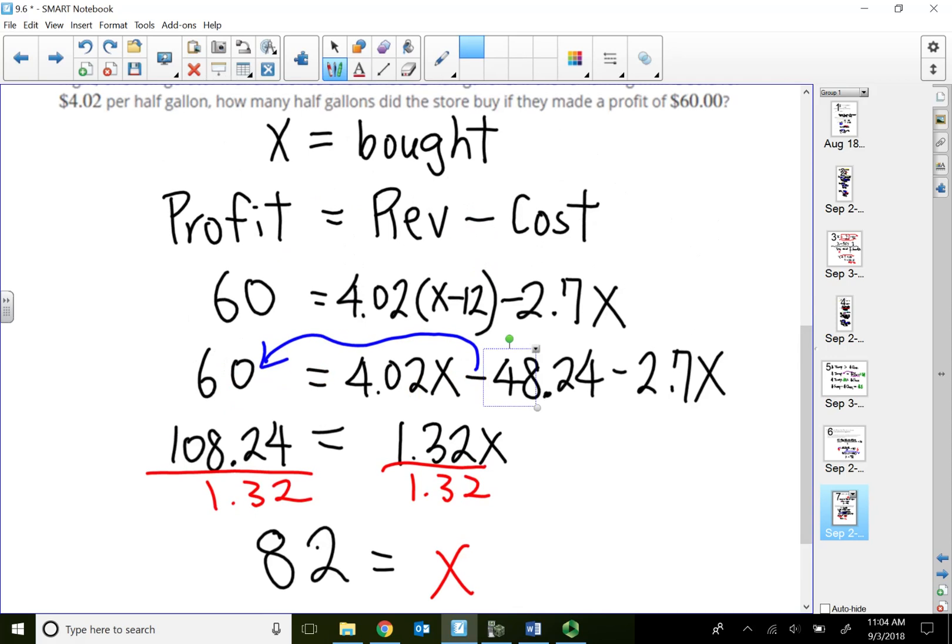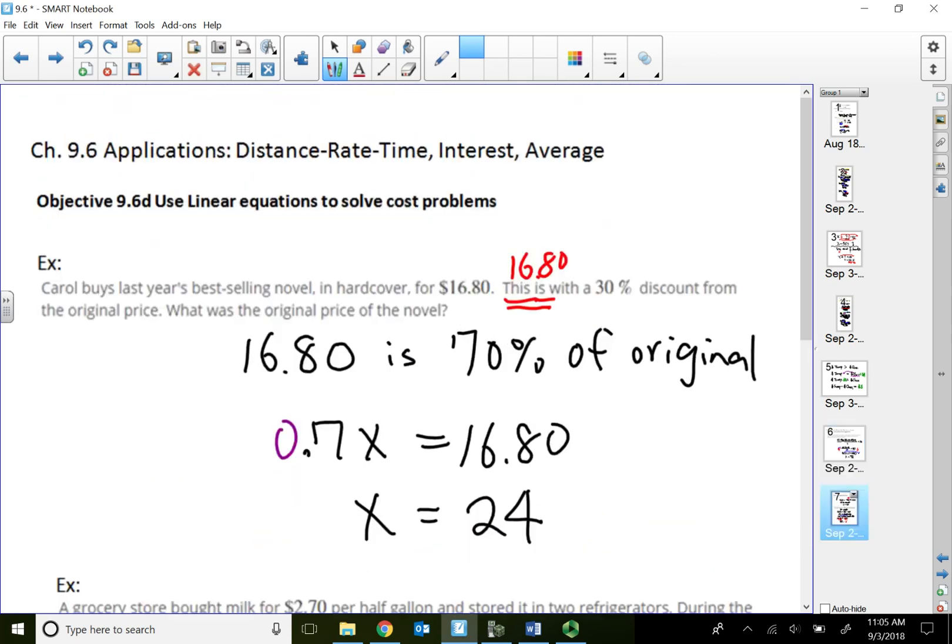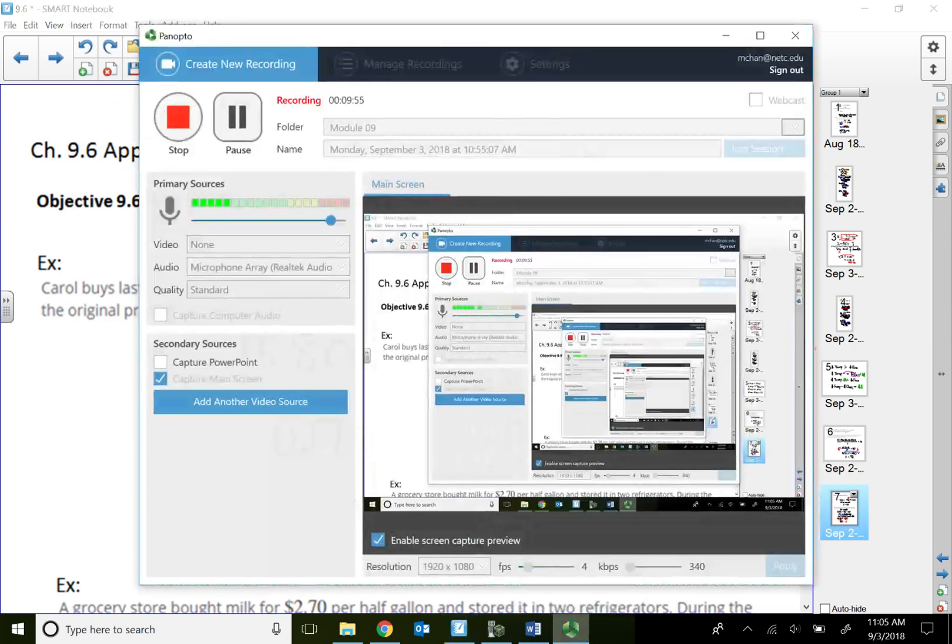All right. And they lost 12 and sold them at $4.02 per half gallon minus the cost, which is 82 of those, in order to get the profit of $60. All right. So in this lecture video, we talked quickly about using linear equations to solve average problems and cost problems. That will conclude this video. Thank you for watching.